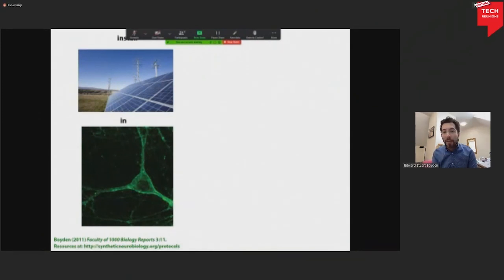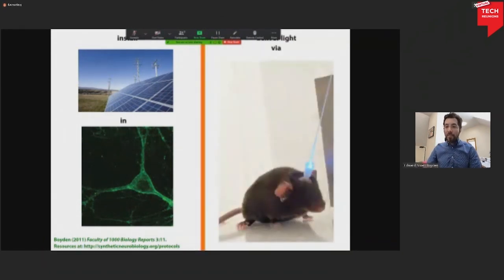Well, suppose you could install a little solar panel in a brain cell. The solar panels convert light to electricity. The brain cells compute using electricity. We could then control brain cells with light. Now you can also get light into the brain. The brain doesn't feel pain, so you can bring light in with an optical fiber. If you could do this, you could turn brain cells on or off and see what they do.